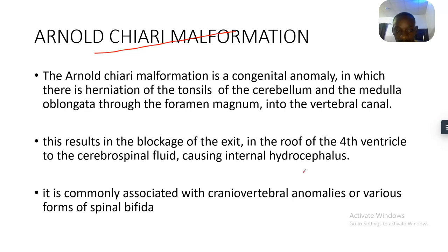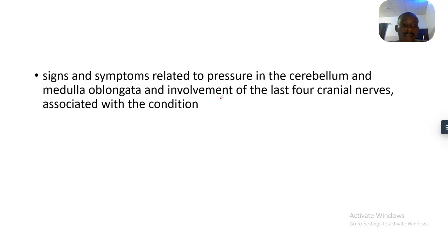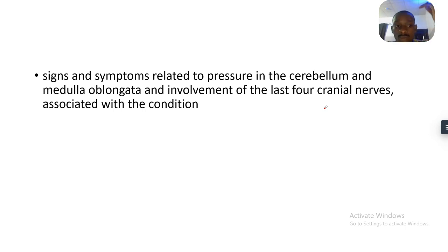This results in blockage of the exits in the roof of the fourth ventricle to the cerebrospinal fluid, causing internal hydrocephalus. It is commonly associated with craniovertebral anomalies or various forms of spina bifida. The signs and symptoms relate to pressure on the cerebellum and medulla oblongata, and involvement of the last four cranial nerves: cranial nerve 9, 10, 11, and 12.